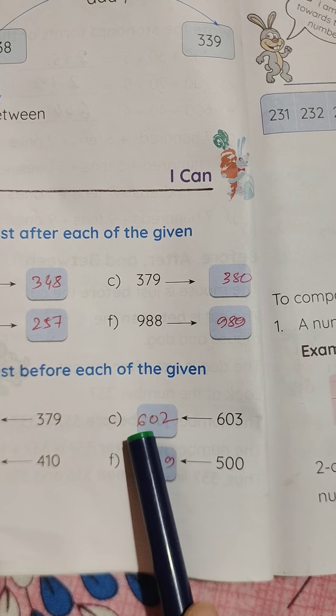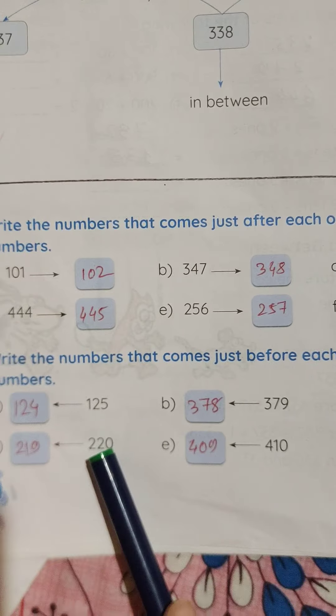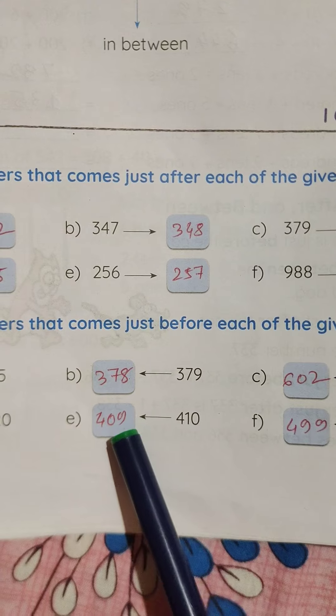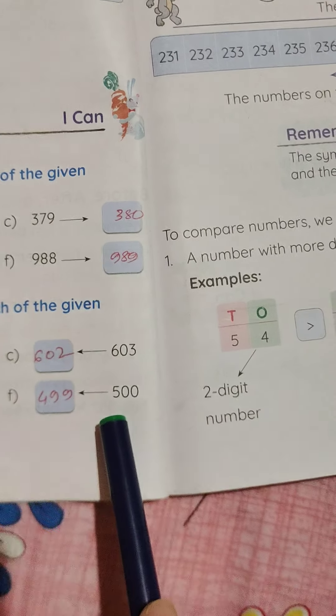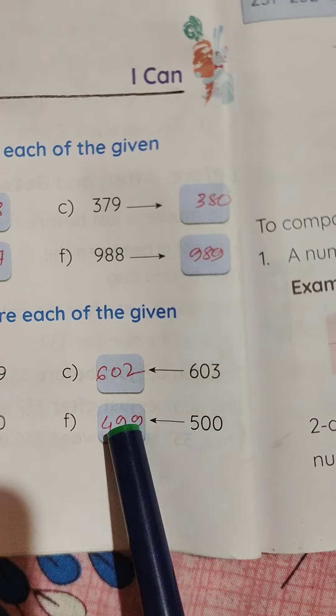603, it will be 602. 220, it will be 219. 410, it will be 409. 500, it will be 499.